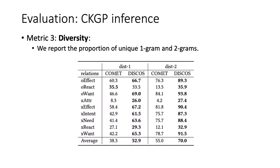The third metric is diversity. For the top 10 retrieved tails given a certain head, we check the diversity of all 10 tails using the proportion of unique 1-grams and 2-grams. Again, Discourse performs much better on this metric.